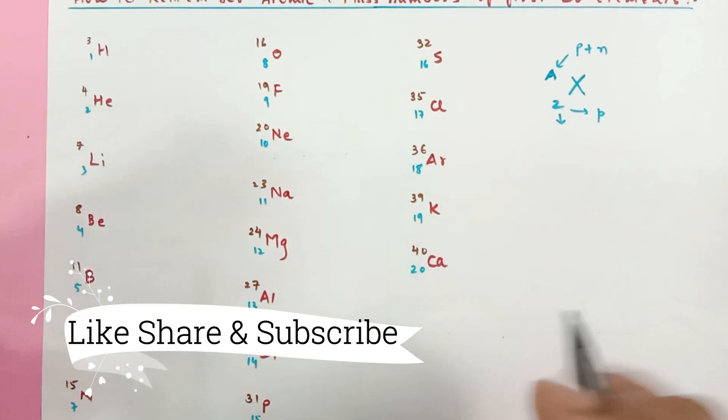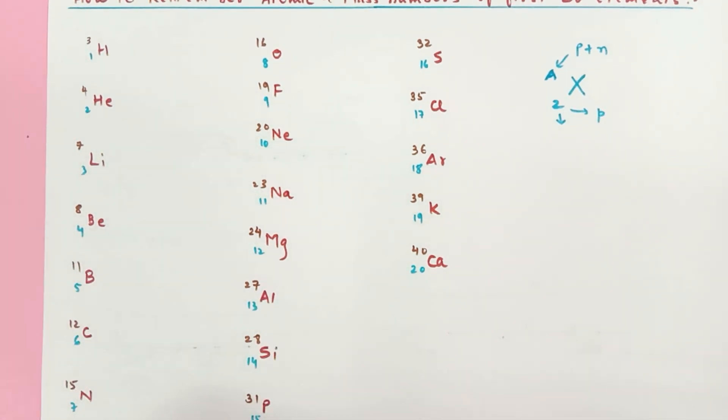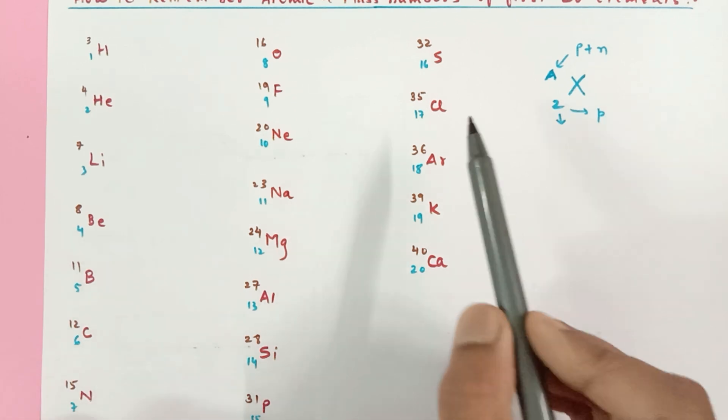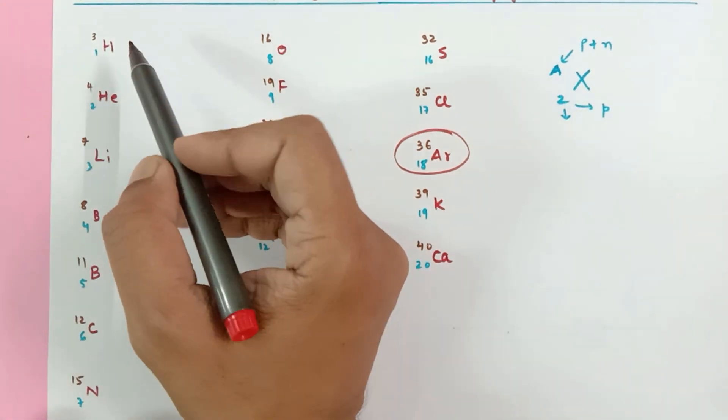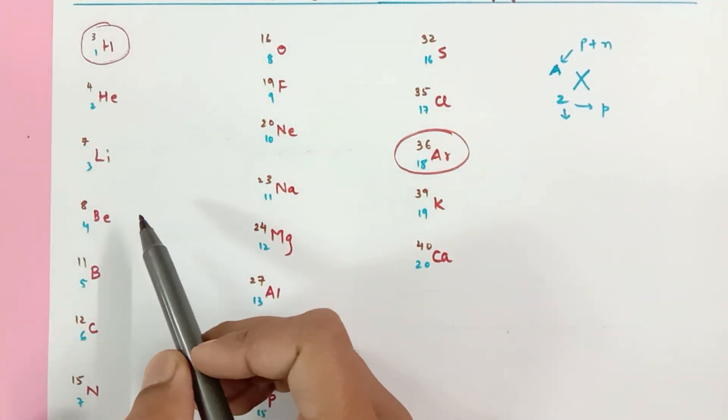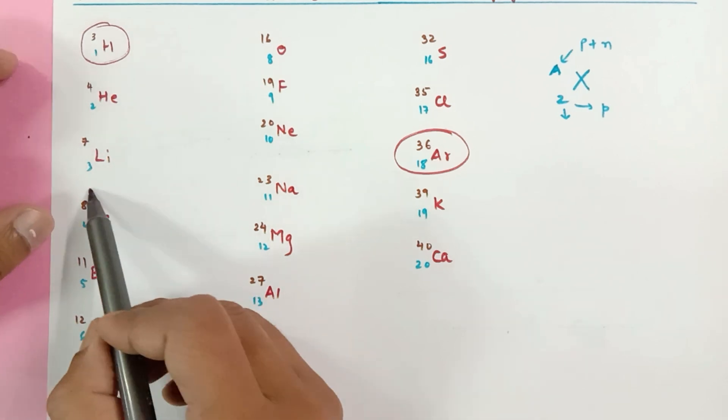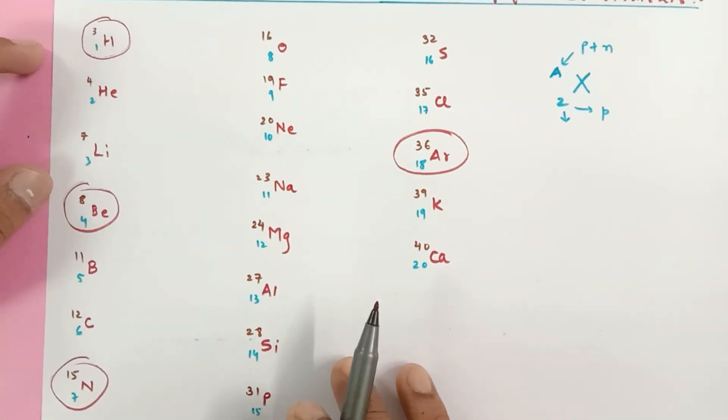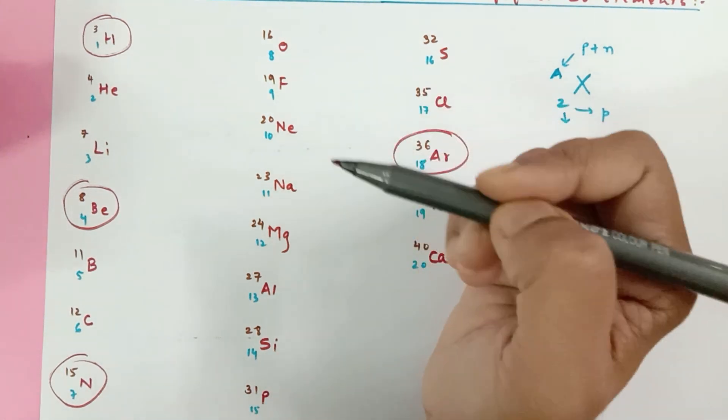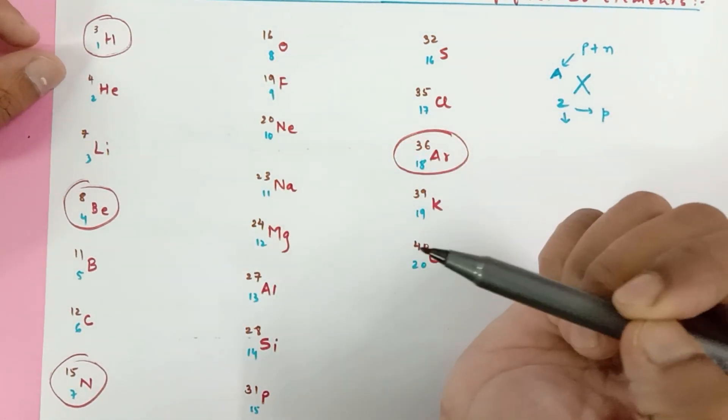There we go. Now see there are only 4 exceptions that we need to remember. One from this row is argon. From here we have 3: this is 1, then this is 2, and this is 3. Now see, this rule doesn't apply to these 4.